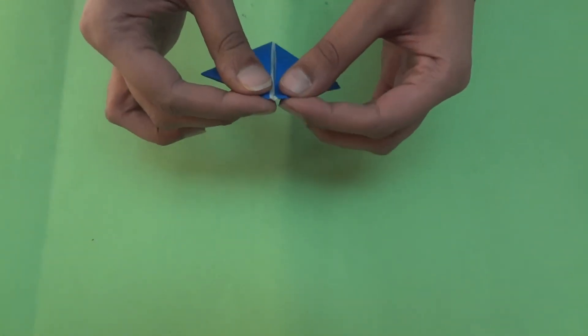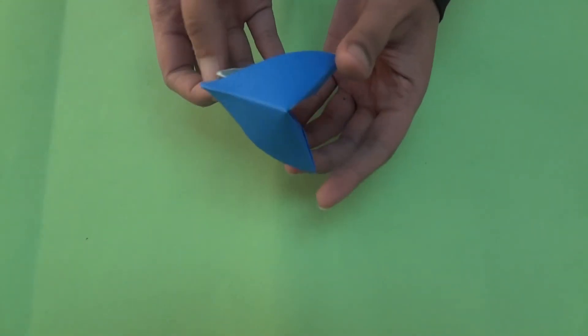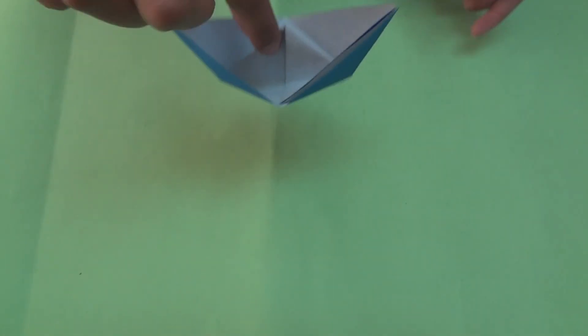Now, fold with both hands and open. Just adjust. And see, your paper boat is ready.